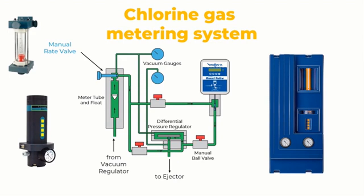Differential pressure regulators are intended to maintain vacuum. A chlorine gas system's objective is to inject chlorine into the water at a rate that will keep the appropriate residual amount of chlorine in the process water constant. To maintain the desired residual in the treated process water, the chlorine feed rate must be adjusted when the water flow rate and water quality change. In systems where both the process water flow and water quality are consistent, manual feed rate control is an option. It is advisable to utilize an automatic control system if the water flow rate or water quality are variable.